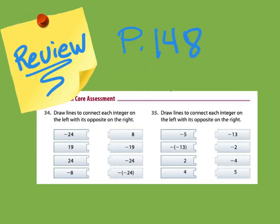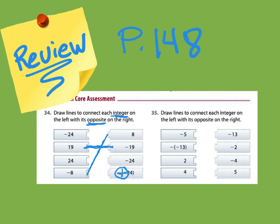Let's turn to page 148 and do a quick review. At the bottom are two connecting problems. I'm looking at negative 8, negative 24, 19, and positive 24. The directions say to draw lines to connect each integer with its opposite — same digit with a negative sign. So right away: 8 and negative 8, and 19 and negative 19. For the 24s, two negative signs in a row means it's a positive, so I have 24 and negative 24 as opposites, and negative 24 and 24.